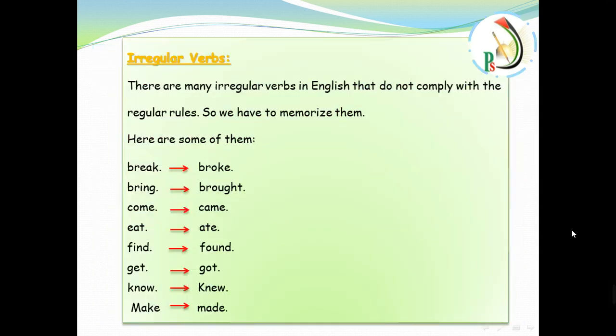What about the irregular verbs? There are many irregular verbs in English that don't comply with the regular rules. So we have to memorize them. We have to write them down and memorize them and practice them. Because usually the teachers focus on them on their exams. And you have to get to know them. Here are some of them: break, broke; bring, brought; come, came; eat, ate; find, found; get, got; know, knew; make, made. And there are more than these verbs. Please pause the video, write these verbs in your exercises book, and try to memorize them correctly.